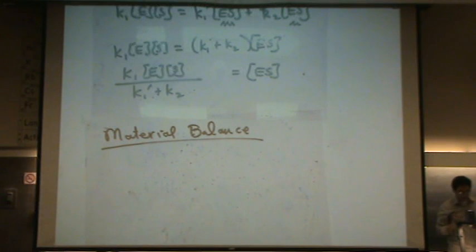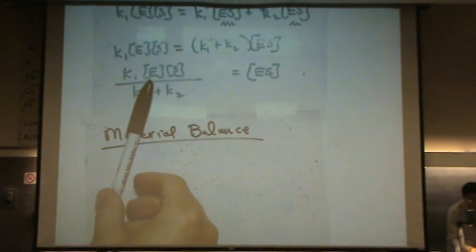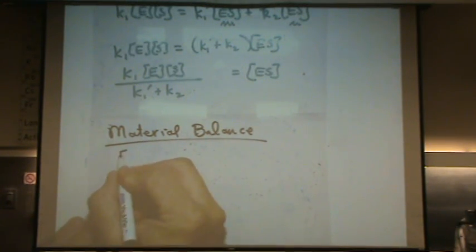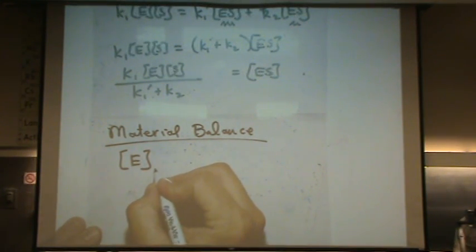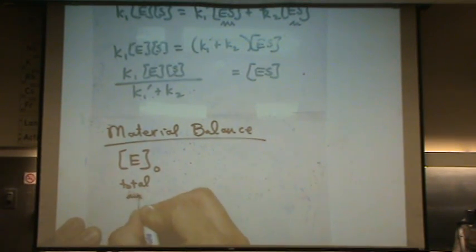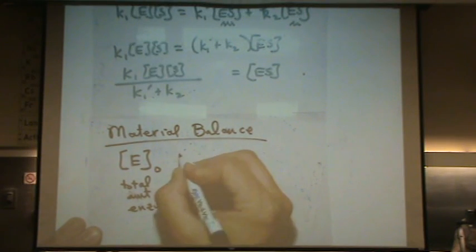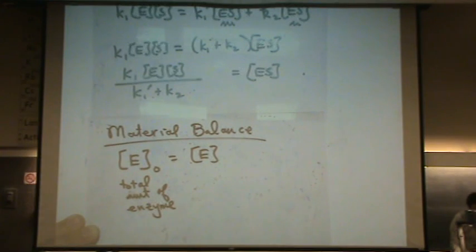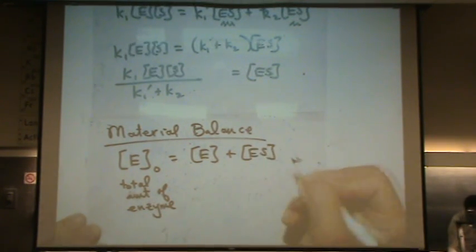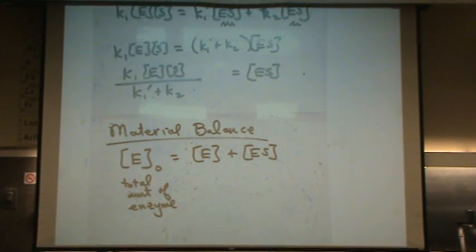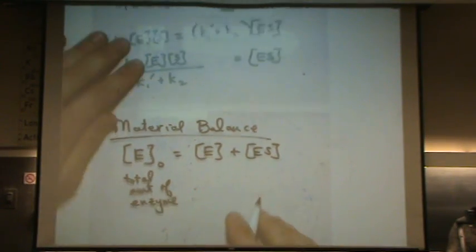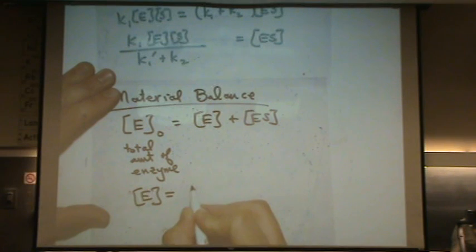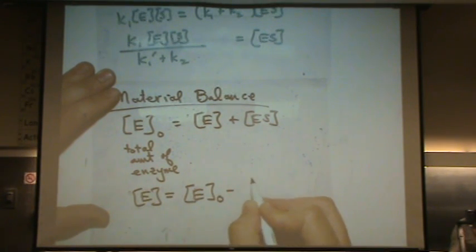You have to do material balance. The problem is the amount of free E, this thing right here, that concentration, we can't measure that. It's unknown. It's hard to measure. But we can measure the total amount of enzyme we have, whether by itself or with the enzyme, if that makes sense. So I know, I'm able to know, your book calls this E0, it's the total amount of the enzyme. Well, where is the enzyme? Some of the enzyme is sitting all by itself, not reacting, and some of the enzyme is attached to the substrate. This is what's called a material balance. That you wouldn't have to know for our class.